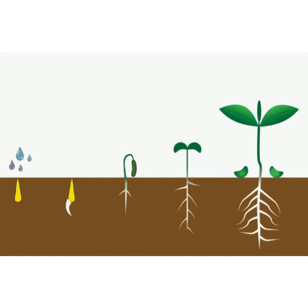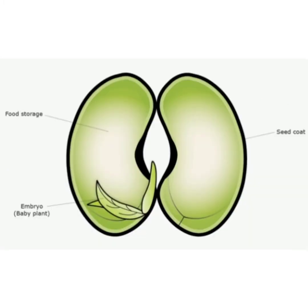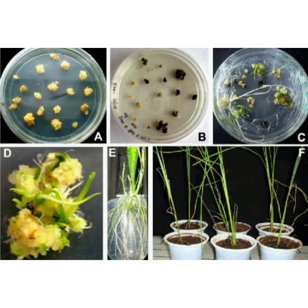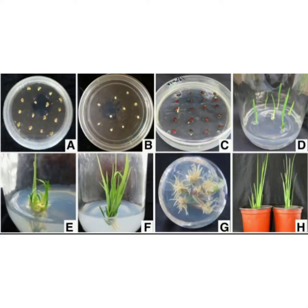Plants reproduce in many ways. Most plants reproduce through seeds. New plants can also be grown using a very small piece of the mother plant in controlled conditions in a laboratory. This special technique is called Tissue Culture.